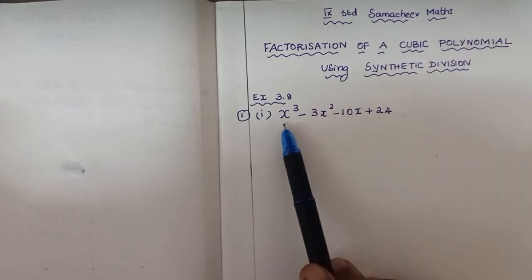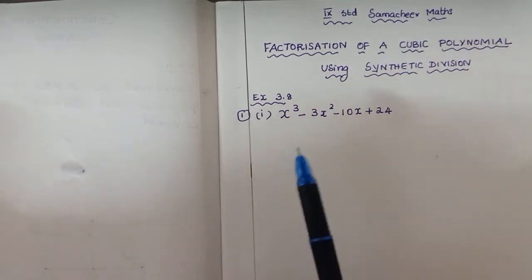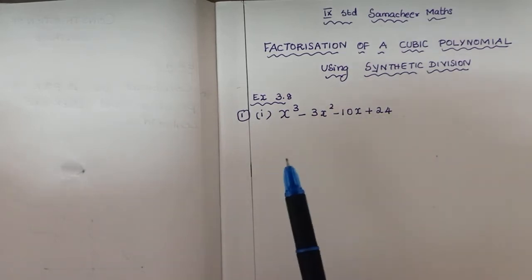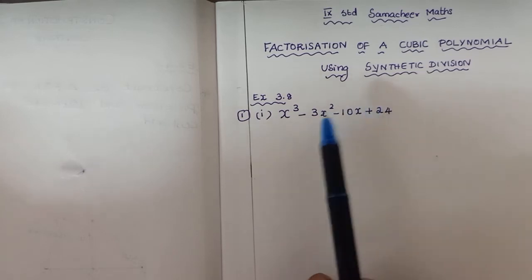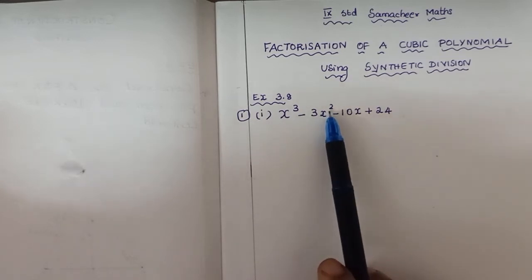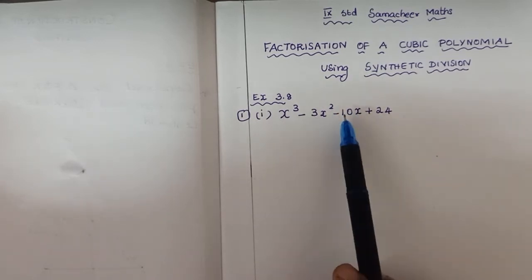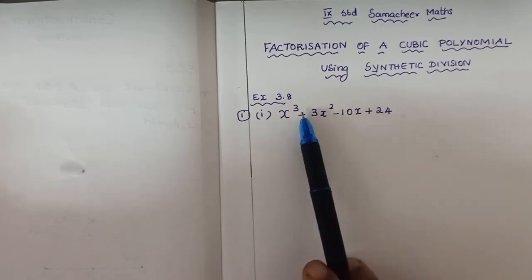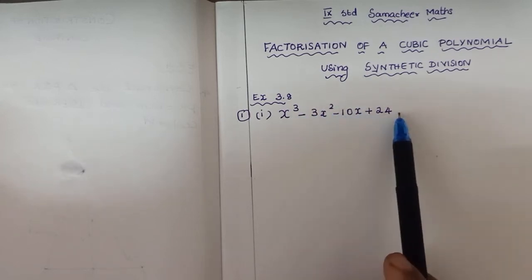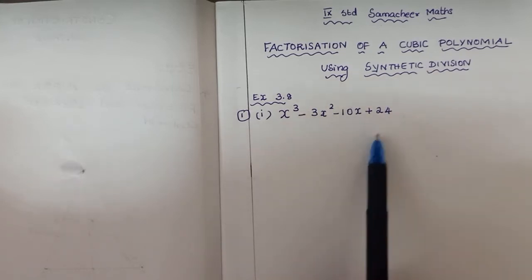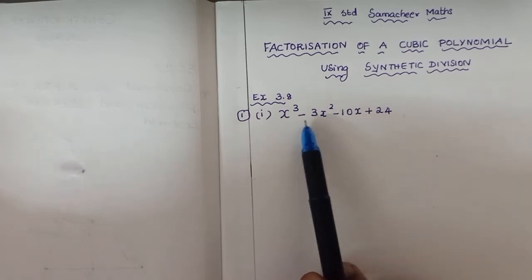First we need to check whether the polynomial is in standard form. Standard form means the terms must be arranged in decreasing order of degree: x cube, then x square, then x to the power 1, then the constant (x to the power 0, which is hidden). If not in this order, we need to rearrange it.